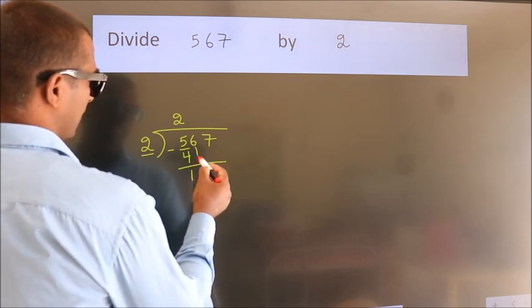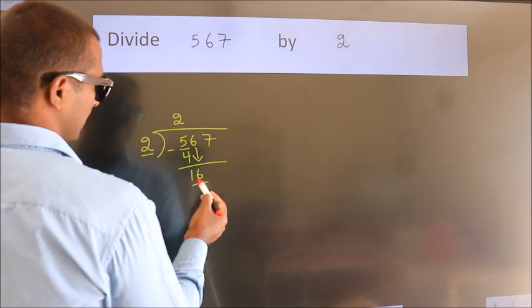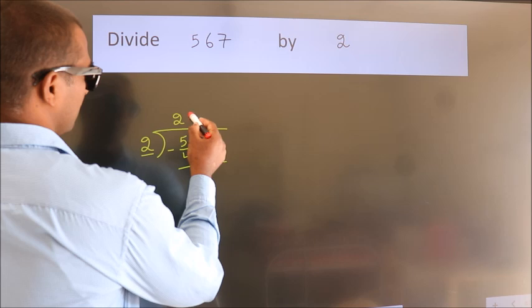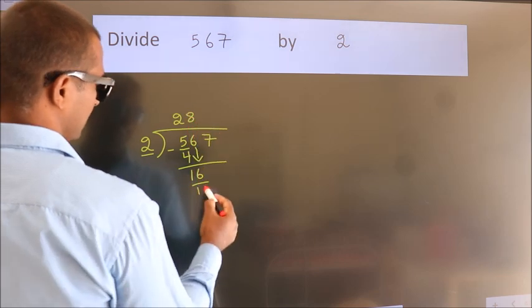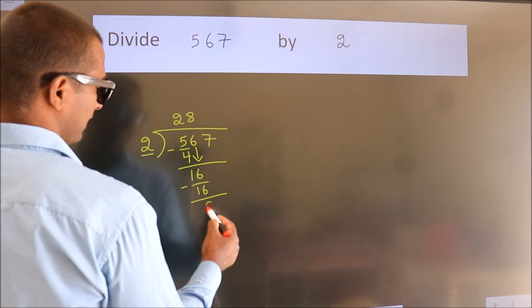After this, bring down the beside number. So 6 down, so 16. When do we get 16? In the 2 table, 2 times 8 is 16. Now we subtract. We get 0.